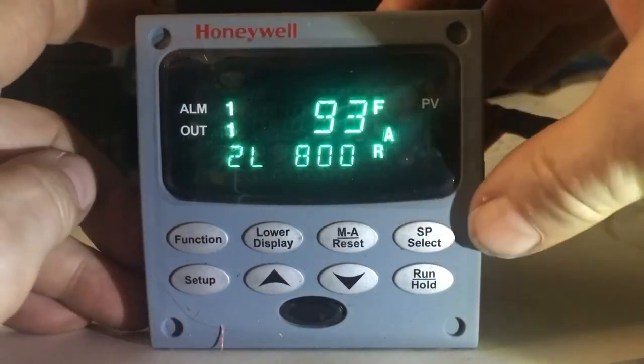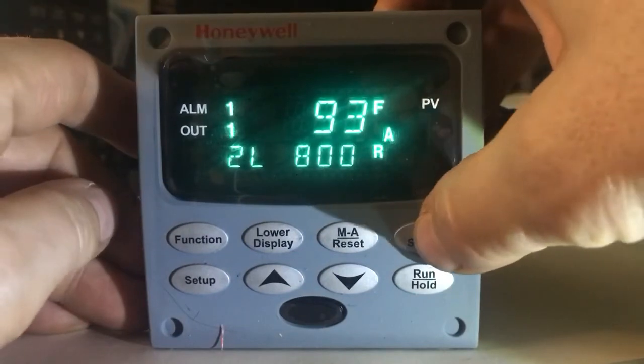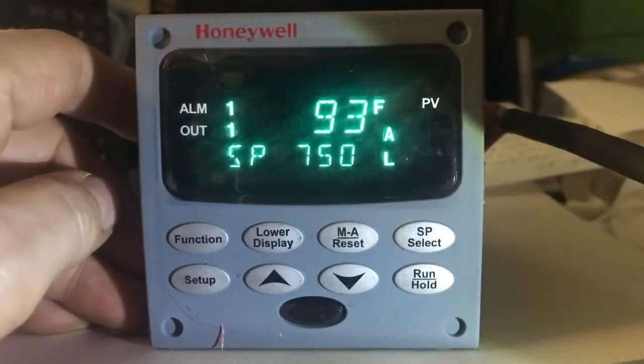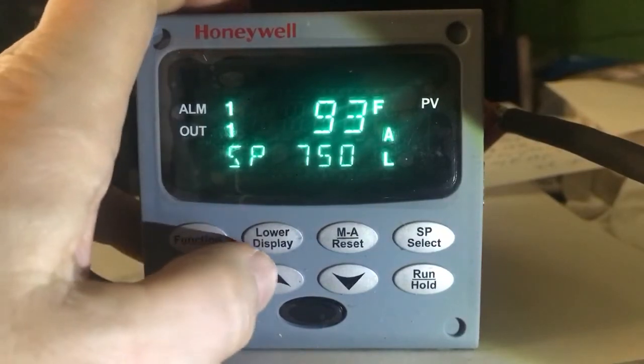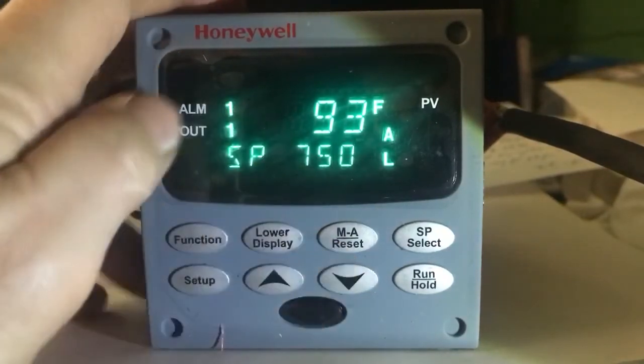If you press the set point select button here on the right, you could go over to set point one. When you're running the oven, if you want to change the set point, you just move it up and down.